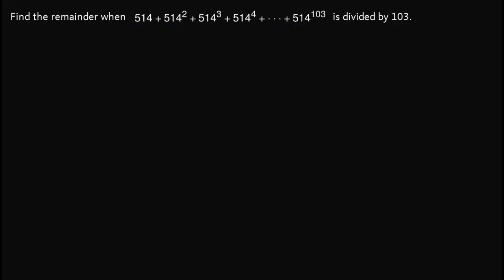To start solving this one, we note first that by knowledge on modular arithmetic, we note that to find the remainder when 514 is divided by 103, we write it like this — the remainder would be out here. So this is read as 514 is congruent to this one, modulo 103.